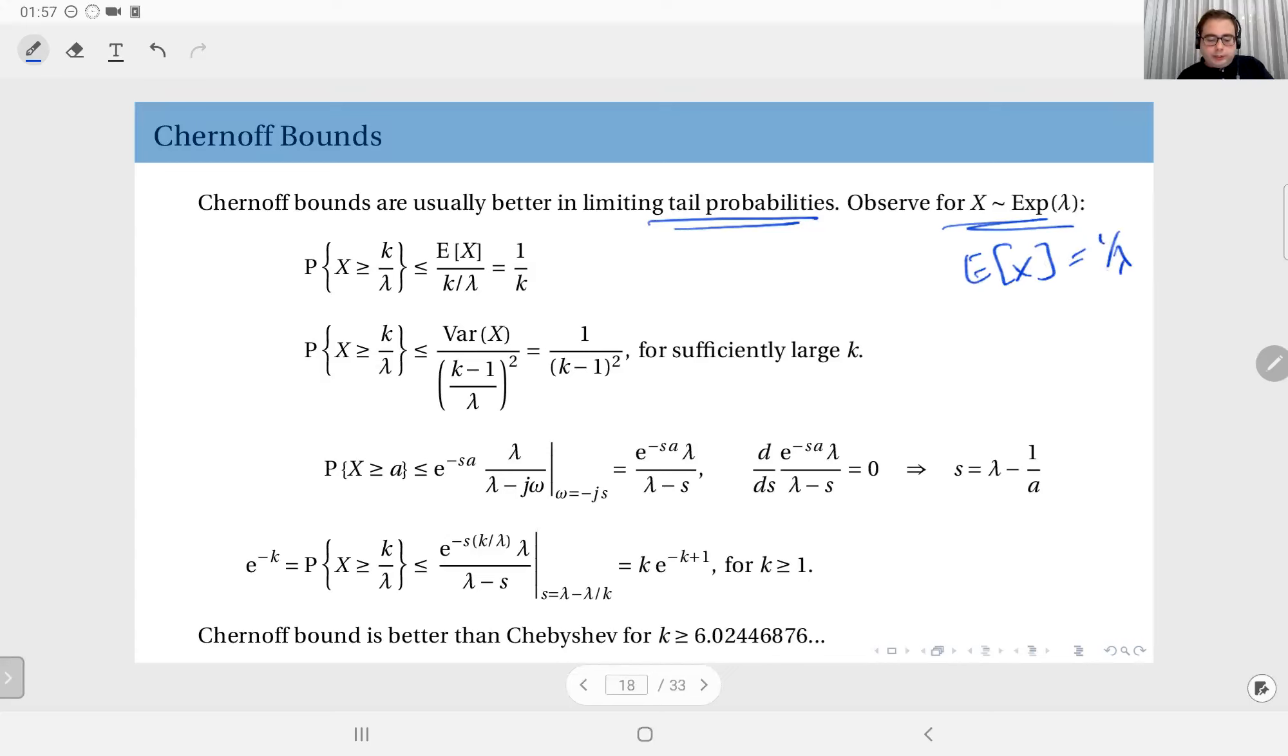So here we will look at the probability of X exceeding k over lambda. This is k times the mean value. We expect the Chernoff bounds to get better as k gets larger, going farther away from the mean.